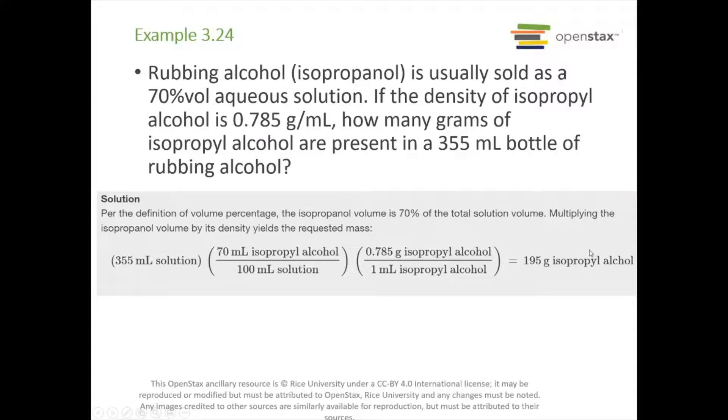For example, rubbing alcohol, which is next to impossible to find right now in stores, is usually sold as a 70% volume aqueous solution. If the density of isopropyl alcohol is 0.785 grams per milliliter, how many grams are present in a 355 milliliter bottle of rubbing alcohol? We're told 70%, which means there are 70 milliliters of isopropyl alcohol for 100 milliliters of solution. We're starting with 355 milliliters of solution. That gives us milliliters of isopropyl alcohol. Then we multiply times the density, and we're left with grams of isopropyl alcohol, and we get 195 grams.